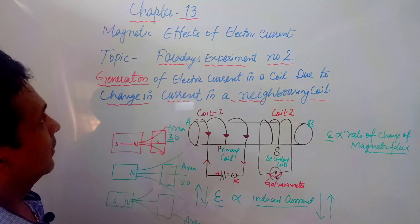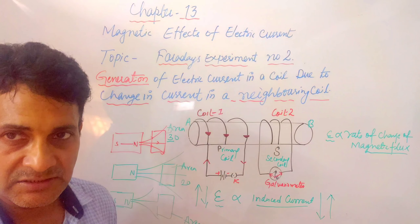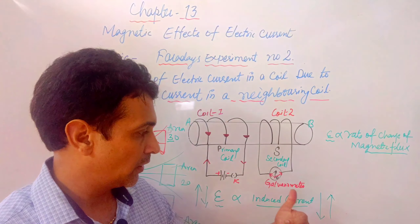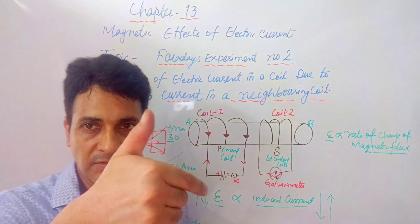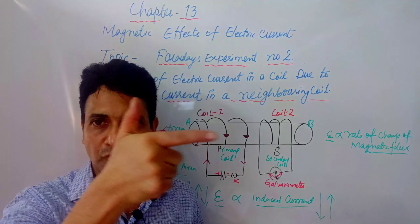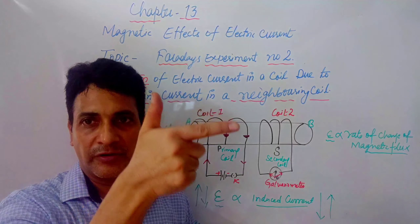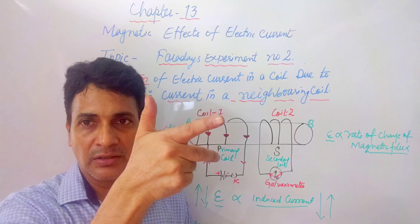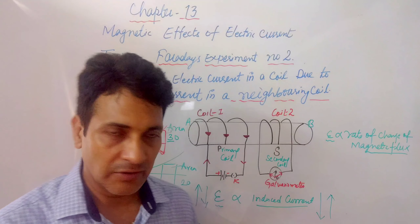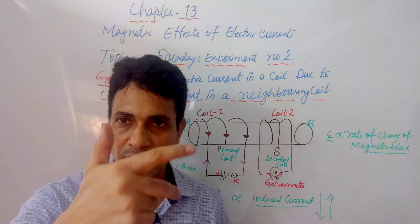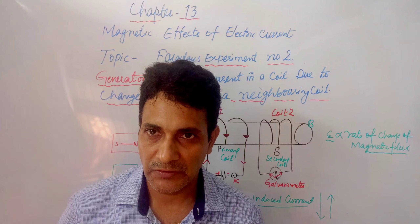So this was about Faraday's experiment number two. In the next video, we will discuss Fleming's right-hand rule — the relationship between force, field, induced current, and motion of the conductor. That topic will be covered in the context of the electric generator. Thank you very much, keep watching.